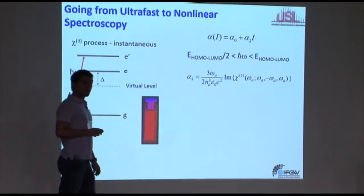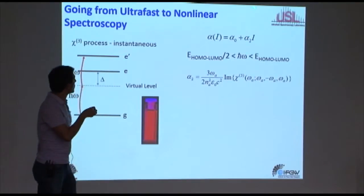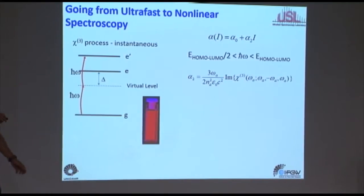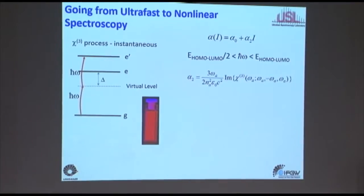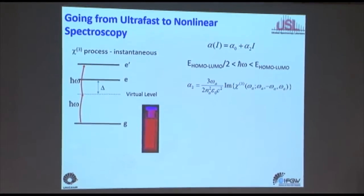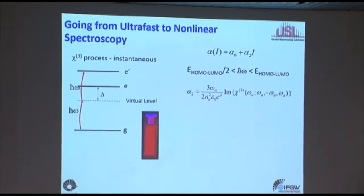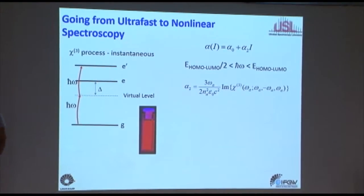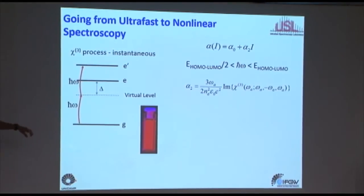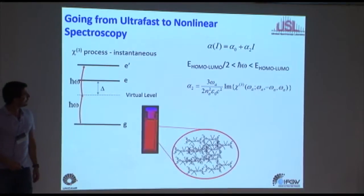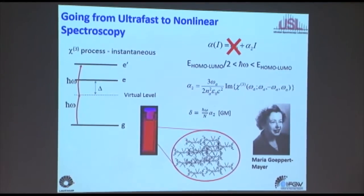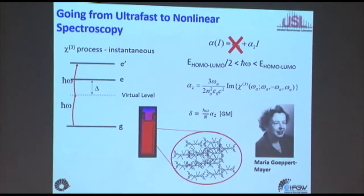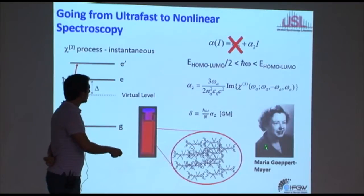We can write the absorption as alpha-naught — the linear absorption — plus alpha-2 times I, the intensity. The more intensity you have, the more effective absorption you get. But in the two-photon regime, there's no linear absorption path available for these photons — nowhere to go by single-photon absorption. So alpha-naught goes to zero and only the alpha-2 times I term remains. If you look at a cuvette, it looks beautiful. Inside, you have a bunch of molecules, quantum dots, or nanoparticles.